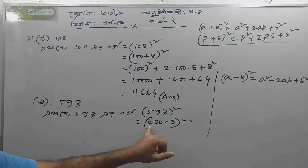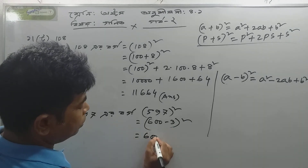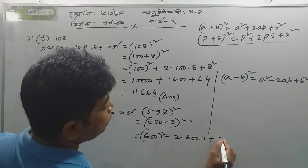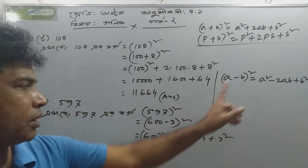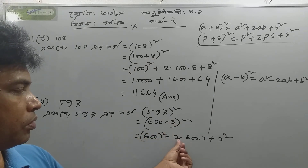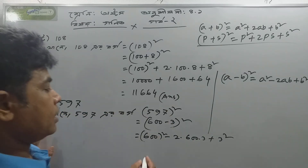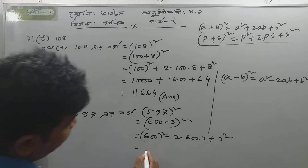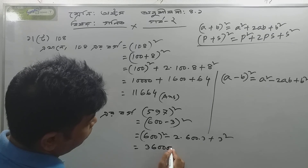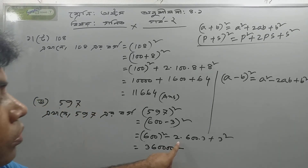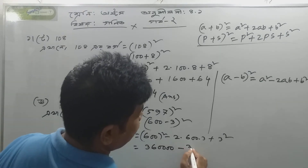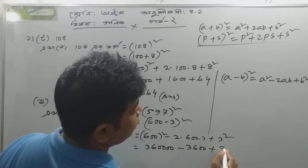So, 100 minus 3 whole square. It is a and it is b. So, it is a² minus 2 into 100 into 3 plus b². A and b are given. So, a² minus 2ab plus b² gives 10000 minus 600 plus 9, which equals 9409.